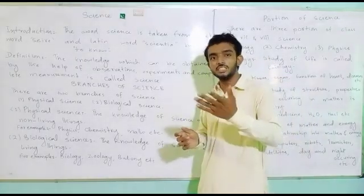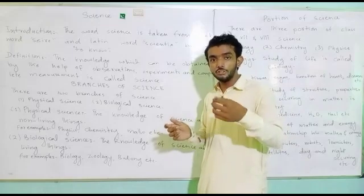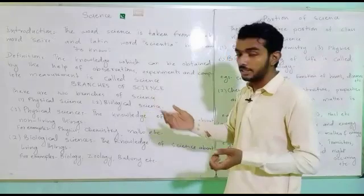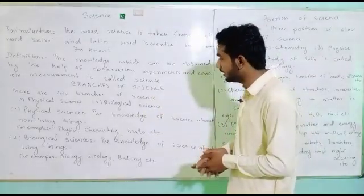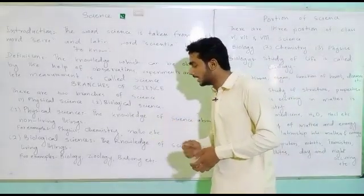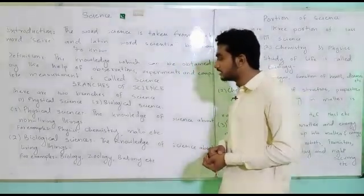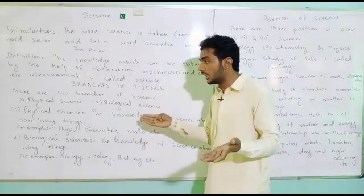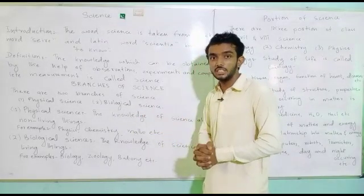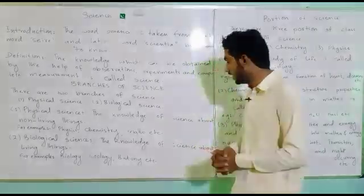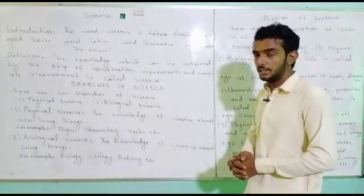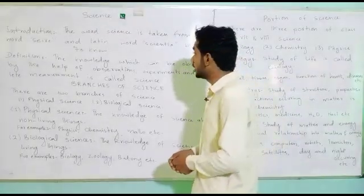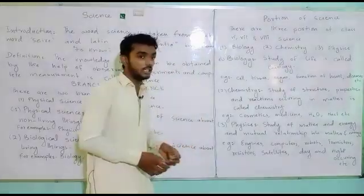Physical science کی مثالیں: physics — جیسے پنکھا چلنا، engine کام کرنا، satellite signals — chemistry، mathematics وغیرہ یہ physical science کی branches ہیں۔ Biological science اس کے الٹ ہے: the knowledge of science about living things is called biological science. For example: biology, zoology, botany, etc.